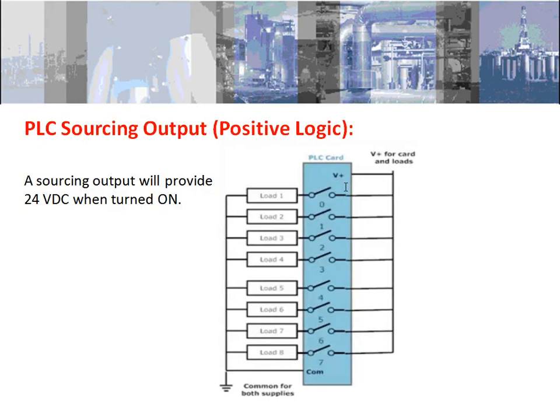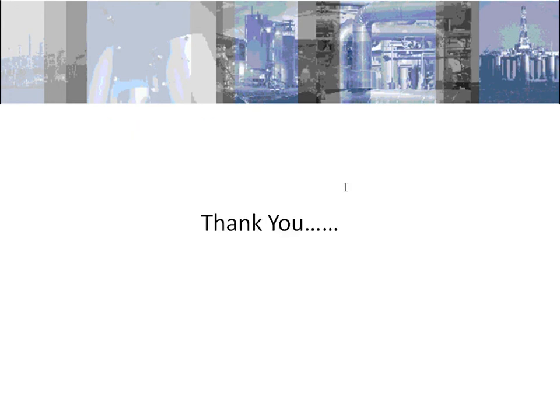PLC sourcing output is of positive logic. When we measure the voltage at the output terminal while the device is in the off state, we get a low voltage. When the device is on — meaning the switch is closed — if you measure the voltage at the output terminal it is logic high. So PLC sourcing output is of positive logic. Thank you for listening to my lecture.